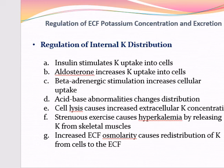The second factor is aldosterone. Aldosterone increases potassium uptake into the cell. Excess aldosterone secretion, as in Conn's syndrome, is almost invariably associated with hypokalemia. Conversely, patients with deficient aldosterone production, as in Addison's disease, often have clinically significant hyperkalemia due to accumulation of potassium in the extracellular space as well as renal retention of potassium.